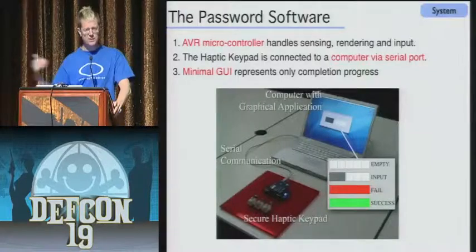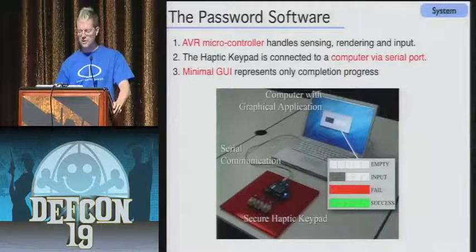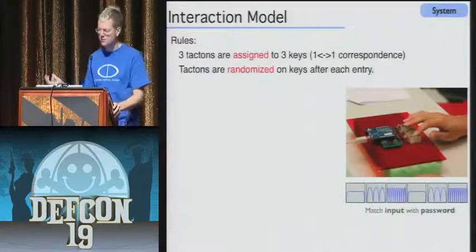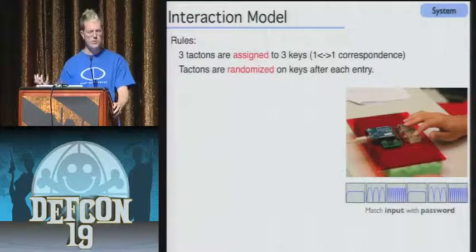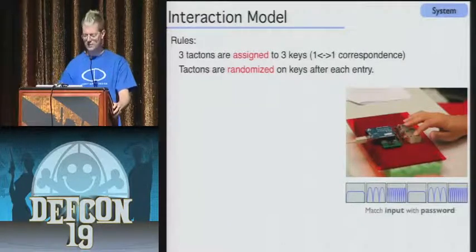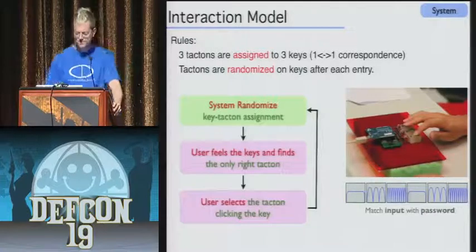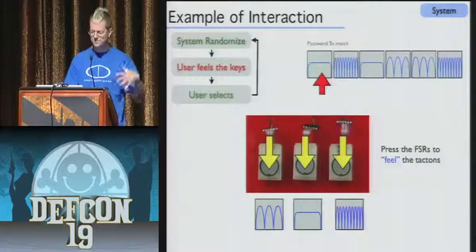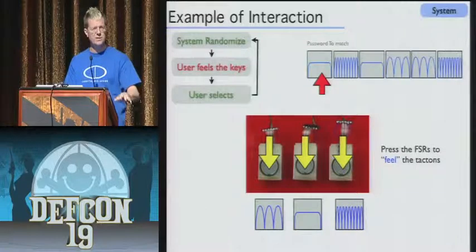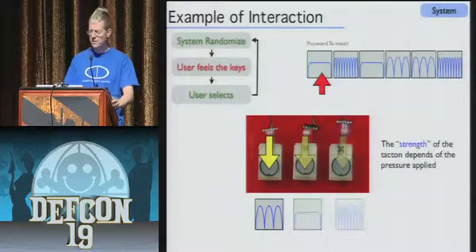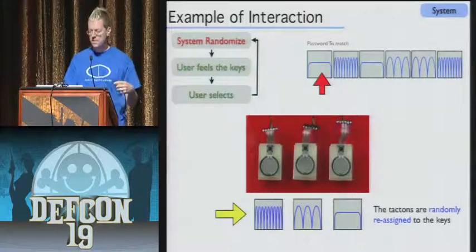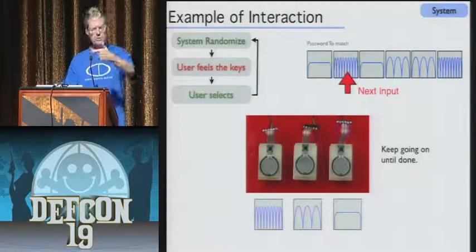There's visual feedback showing how far along you are in the password, but nothing indicating what was entered — just how many things were pressed. The three tactons are always assigned to the three keys with a one-to-one correspondence but in a random order. So even if someone sees the way your fingers move, they can't do a replay attack. You fill all three keys, select the one corresponding to the right tacton in your password, click the key, and repeat. Then they get randomly reassigned as you go through the stages of the password.